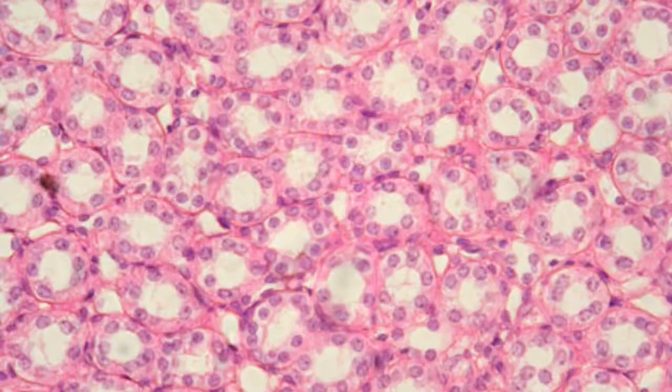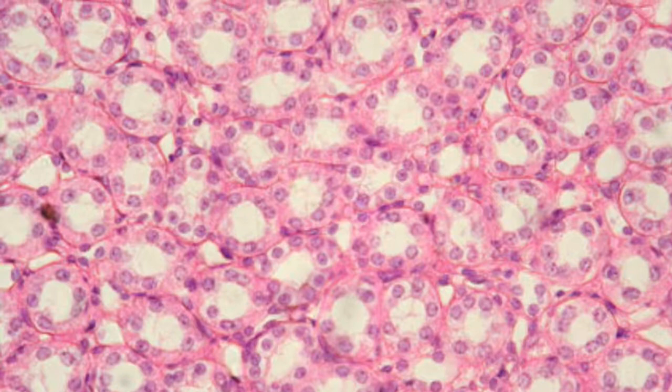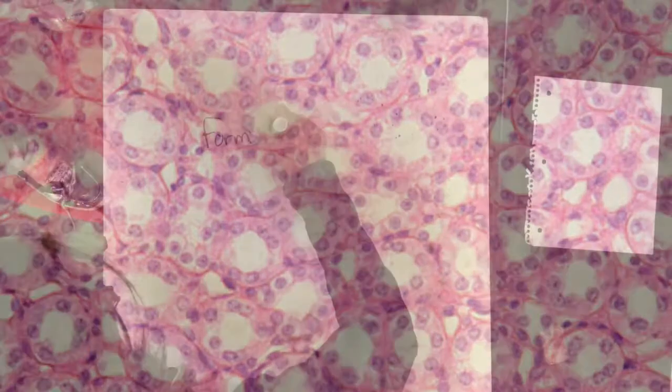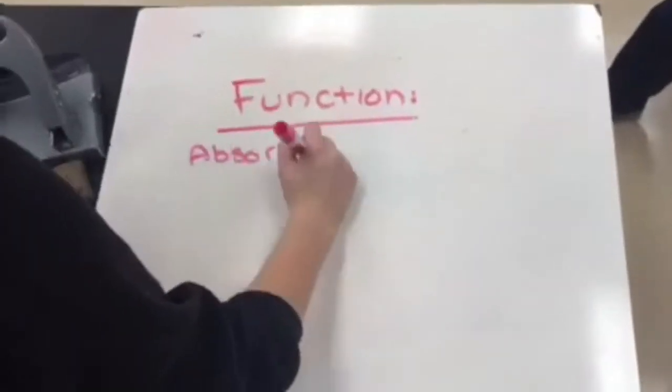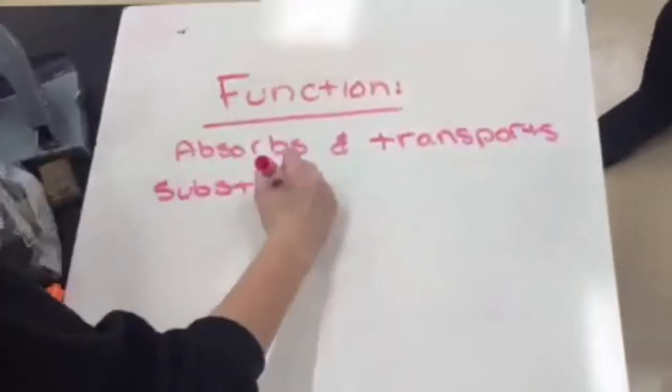Cuboidal epithelium. Cuboidal is a single layer of cube-shaped cells that has a centrally located spherical nucleus. It absorbs and transports substances that are filtrated from the kidney.